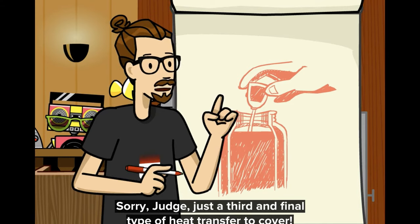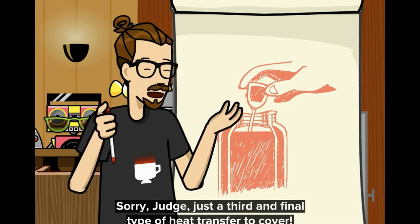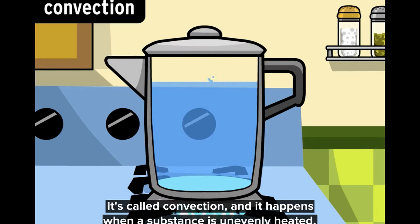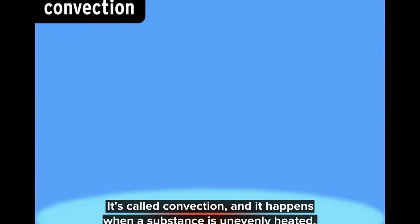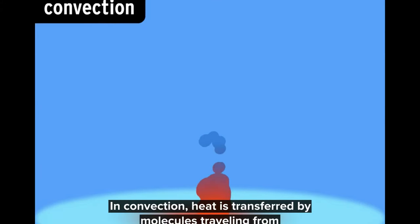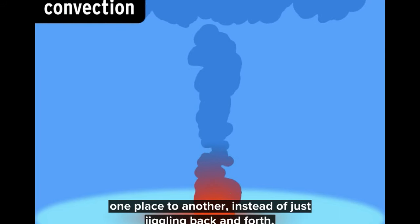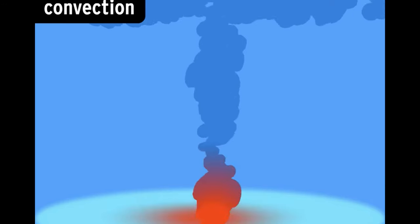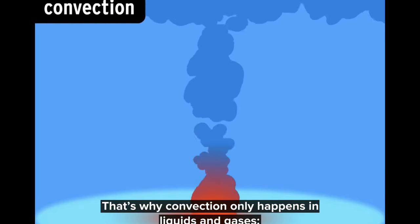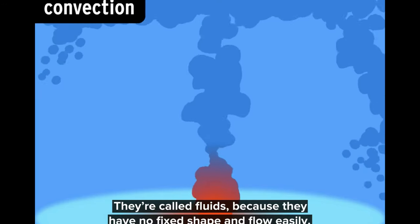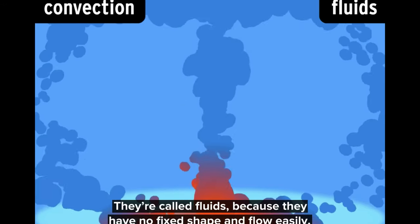Sorry, judge. Just a third and final type of heat transfer to cover. It's called convection, and it happens when a substance is unevenly heated. In convection, heat is transferred by molecules traveling from one place to another instead of just jiggling back and forth. That's why convection only happens in liquids and gases. They're called fluids because they have no fixed shape and flow easily.